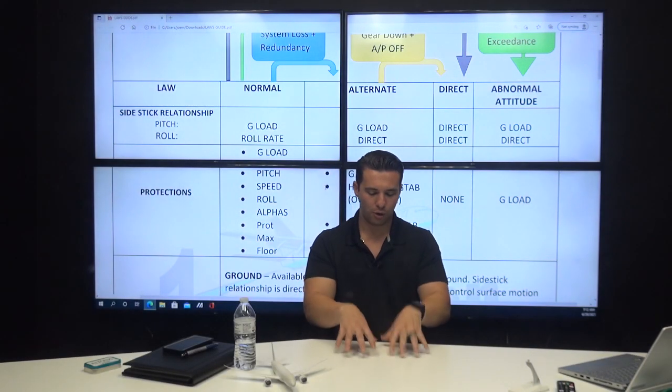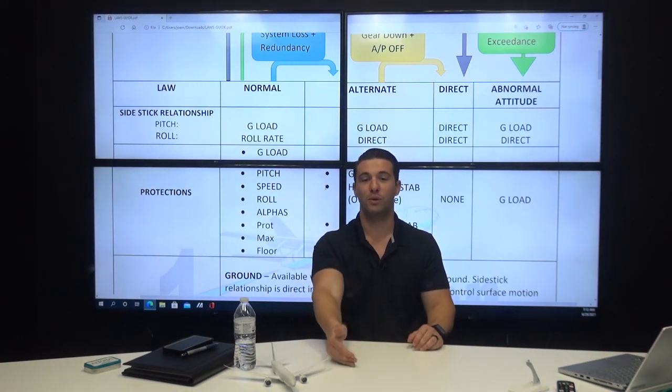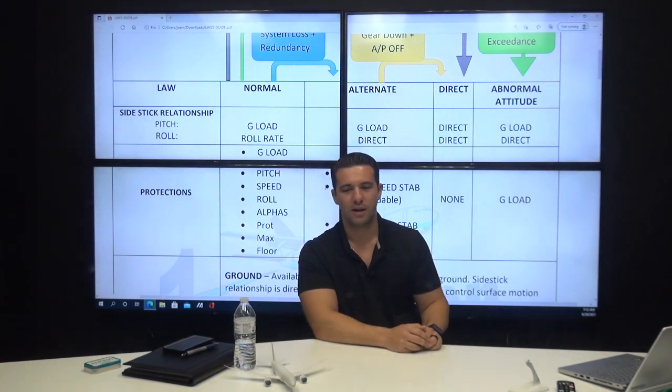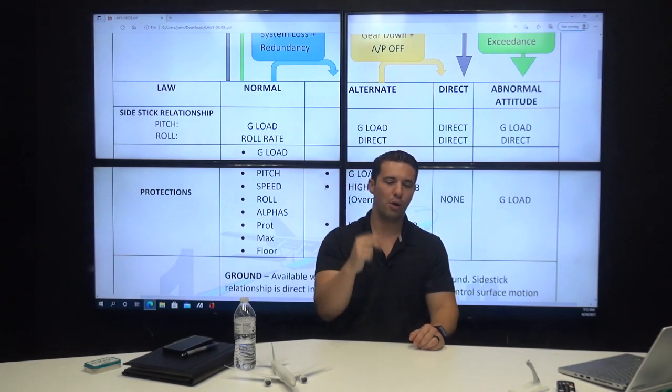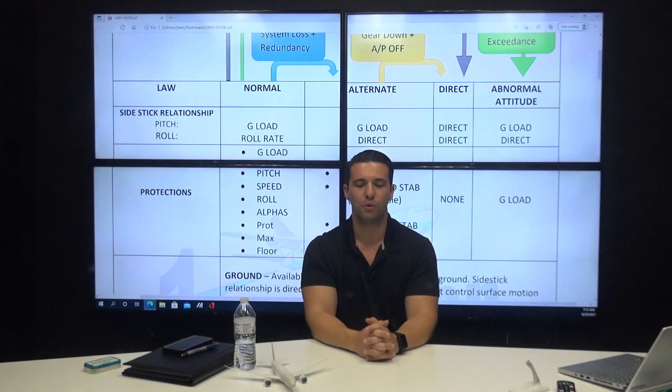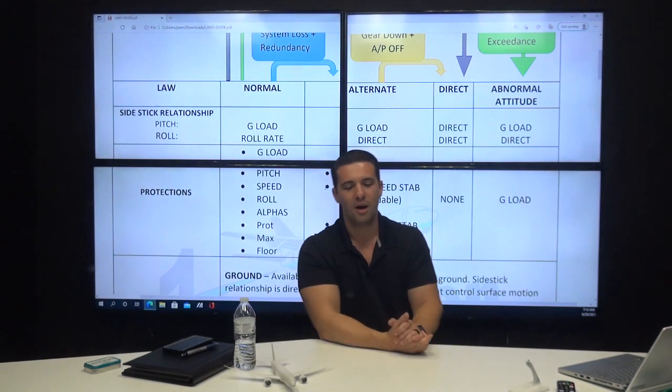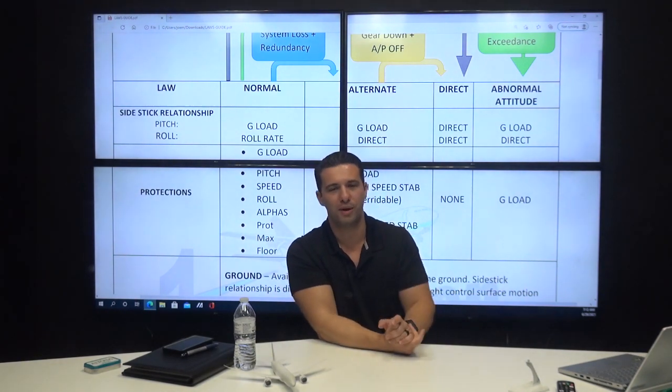Now the auto thrust system, another real common oral question is, how many auto thrust systems do we have installed? And the answer is two. Most people say one, and the reason they say one rightfully so is because there's only one auto thrust push button. Unlike autopilots, autopilot one, autopilot two. There's two autopilots, right? Autothrust, there's just one push button.